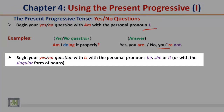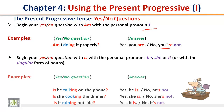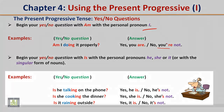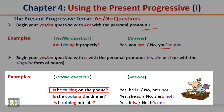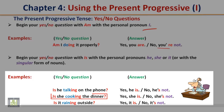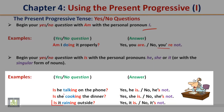Begin your yes or no question with is, with the personal pronouns he, she, or it, or with the singular form of nouns. Examples — Yes or no question: Is he talking on the phone? Answer: Yes, he is. No, he's not. Yes or no question: Is she cooking the dinner? Answer: Yes, she is. Or no, she's not. Yes or no question: Is it raining outside? Answer: Yes, it is. Or no, it's not.